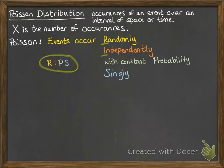So randomly, independently, probability is constant, singly, not at the same time. So let's see how this actually works in context. So we would then say that x follows a Poisson distribution with parameter lambda where lambda is the constant mean.